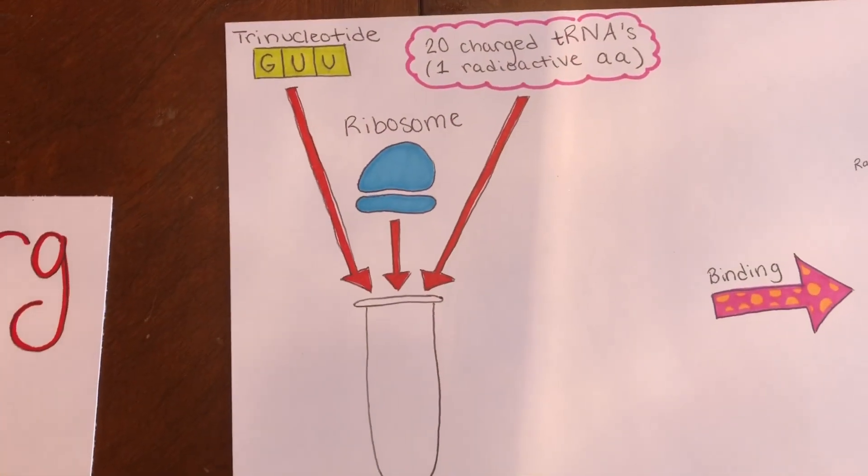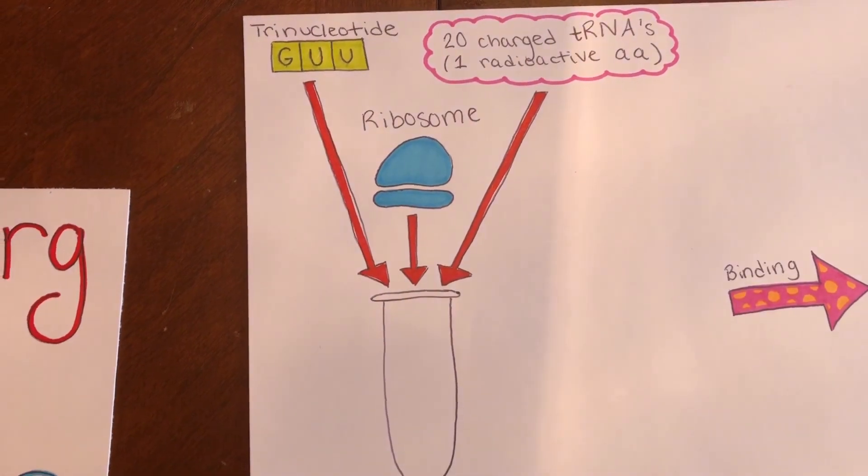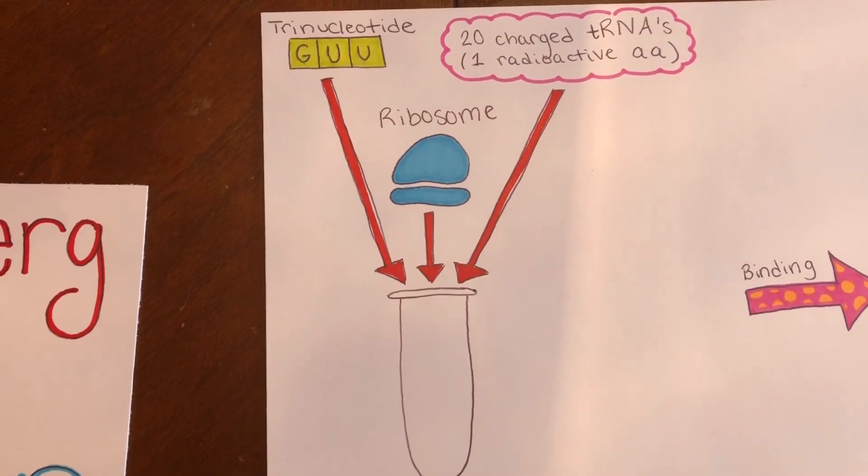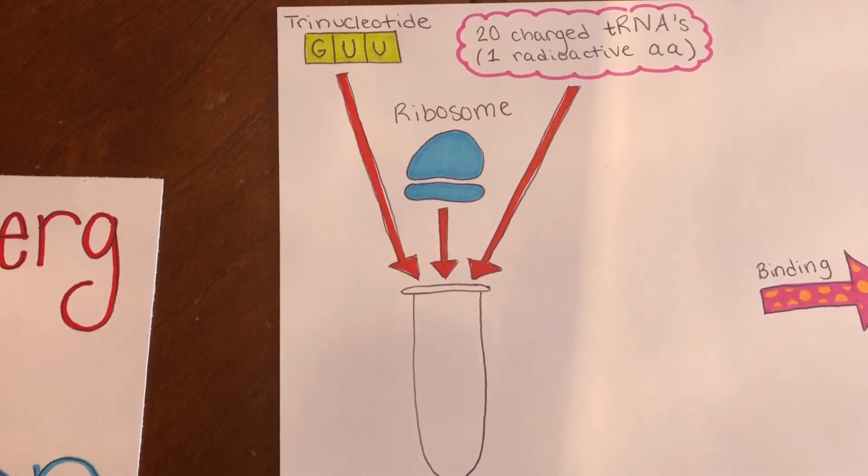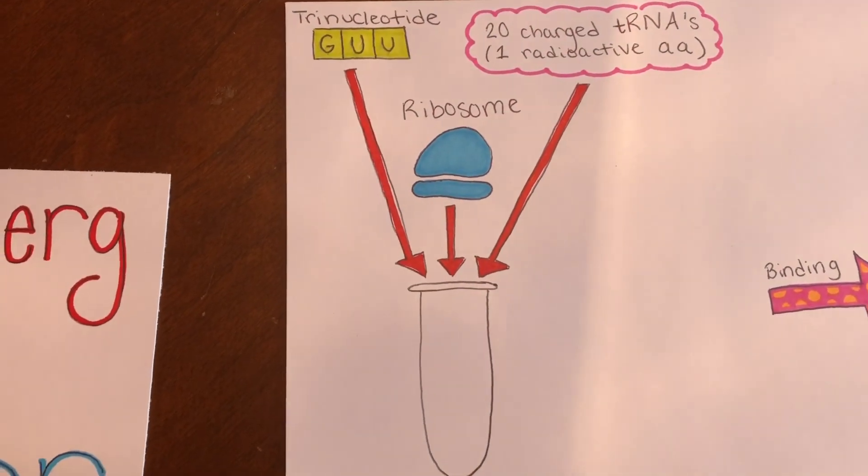They did so by creating a mixture containing a trinucleotide, also known as synthetic mRNA with one codon, a ribosome, and 20 charged tRNAs with amino acids, one amino acid in the mixture being radioactive.